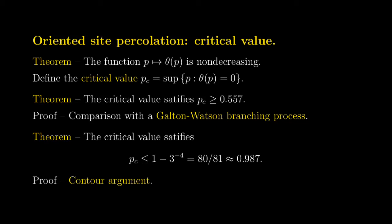This monotonicity result implies that oriented-side percolation exhibits at most one phase transition, which motivates the definition of the critical value PC right after the theorem. PC is the largest value for the density of open edges such that percolation is not possible. Monotonicity implies that for P less than PC there is no percolation, and for P greater than PC we must have percolation with positive probability. In this video and the next I'll prove upper and lower bounds for PC, and in particular prove that PC is not degenerate — not equal to zero or one — which confirms the existence of a unique phase transition.